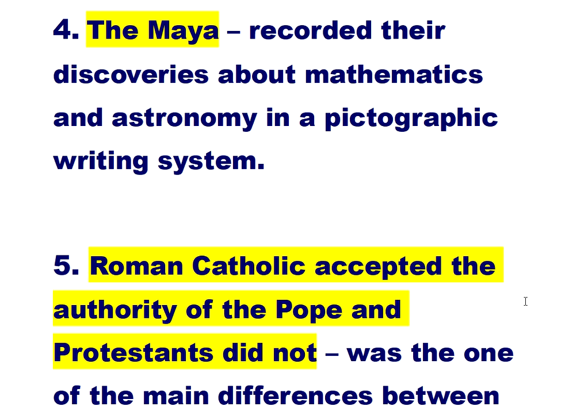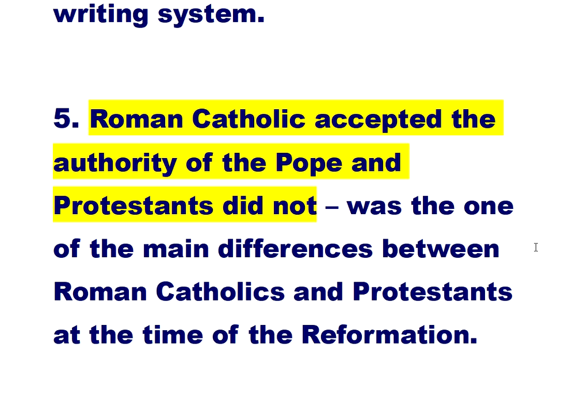Number four: the Maya recorded their discoveries about mathematics and astronomy in a pictographic writing system. Number five: Roman Catholics accepted the authority of the Pope and Protestants did not — this was one of the main differences between Roman Catholics and Protestants at the time of the Reformation.